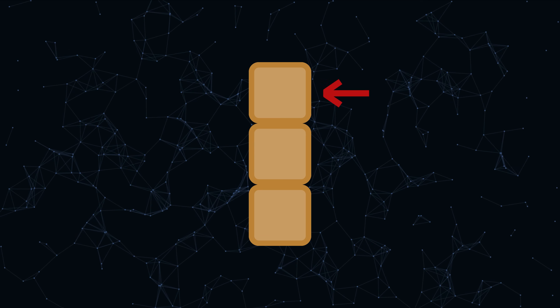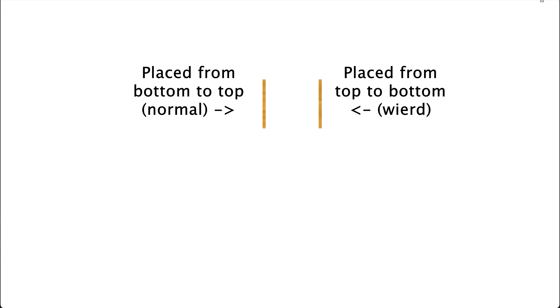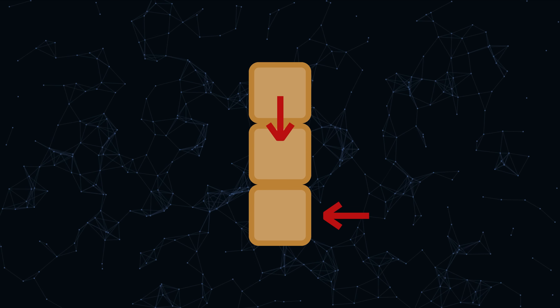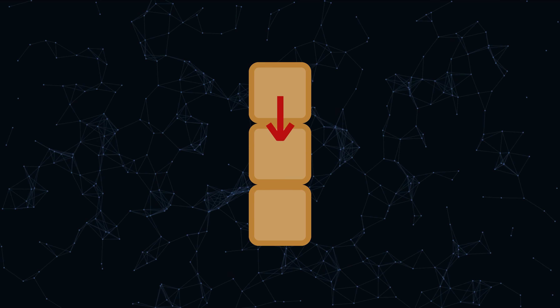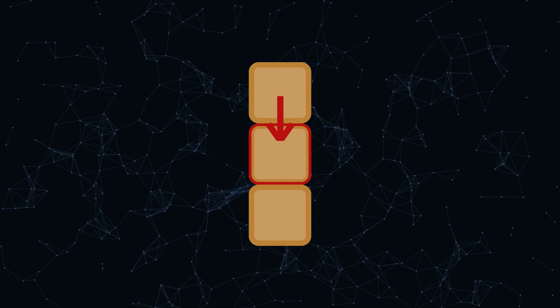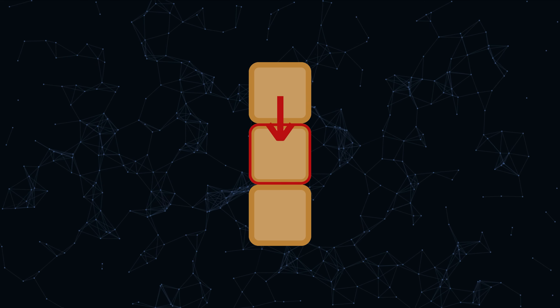There's one bug right now where, since I loop through each pixel from first place to most recently placed, if you put a stack of sand in a certain way it will fall strangely. That's because if the pixels on top are processed first, they will sense a pixel under them and act like they are on solid ground, stopping.